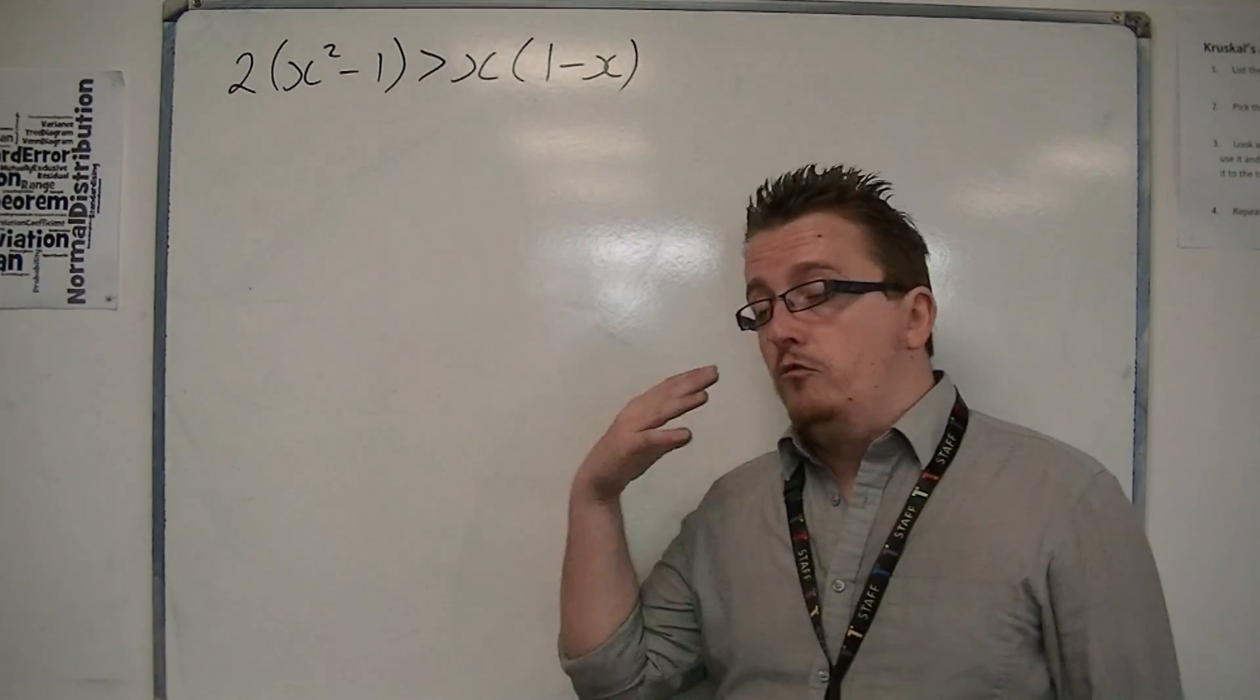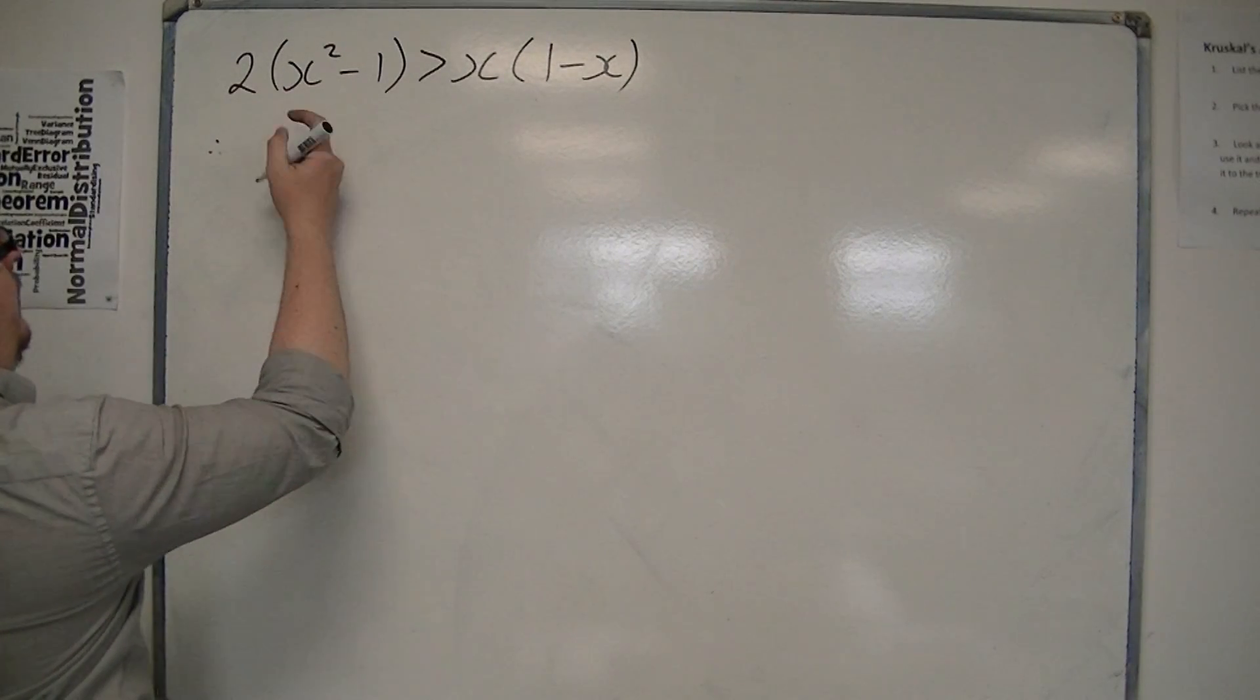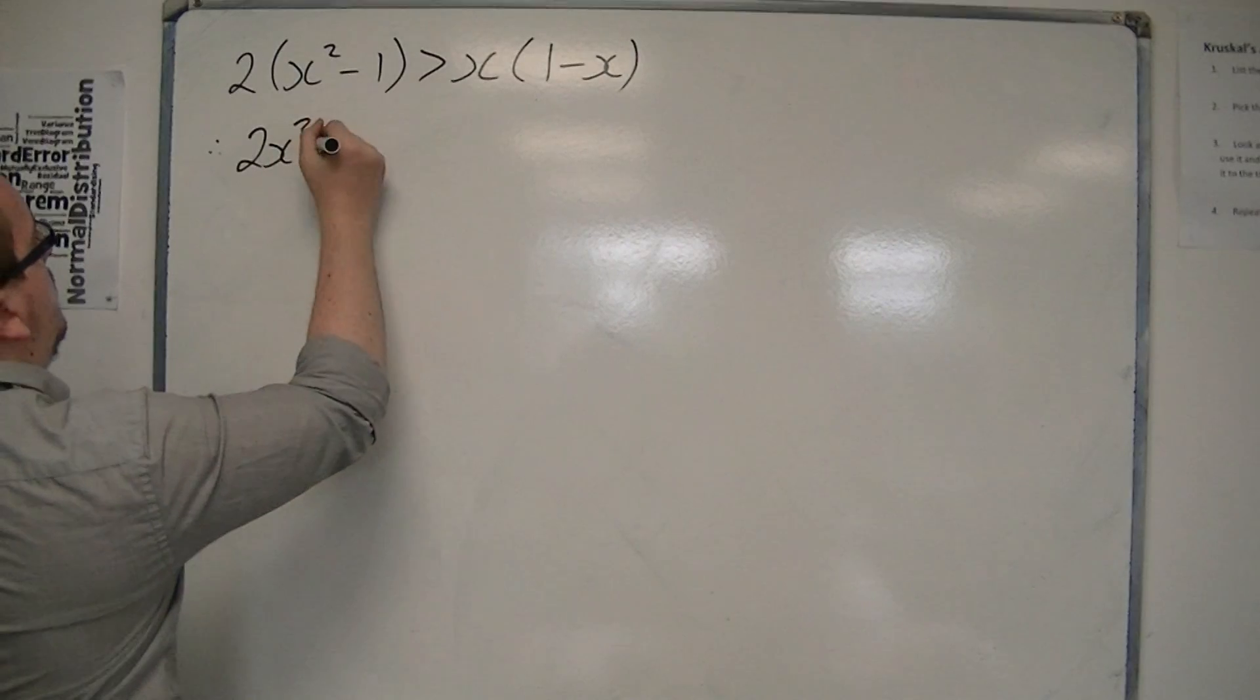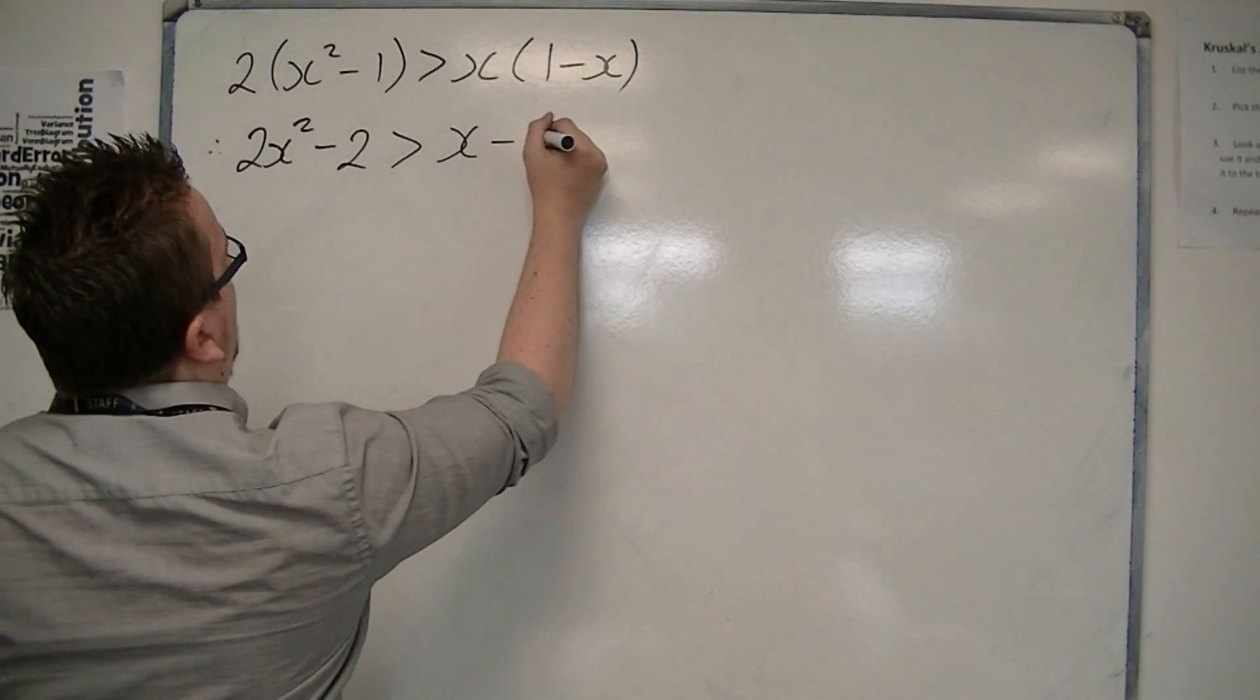I'm going to multiply out brackets and then rearrange. If I multiply out the bracket on the left-hand side, we get 2x² - 2, and on the right-hand side we're going to get x - x².